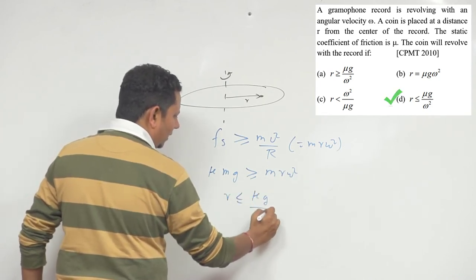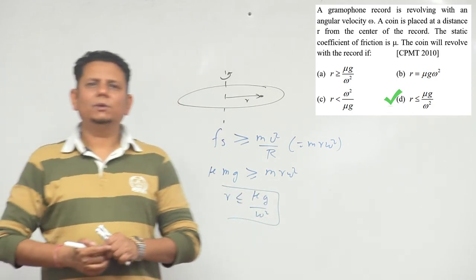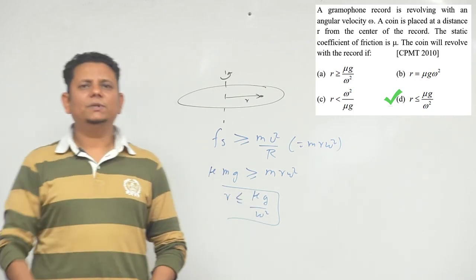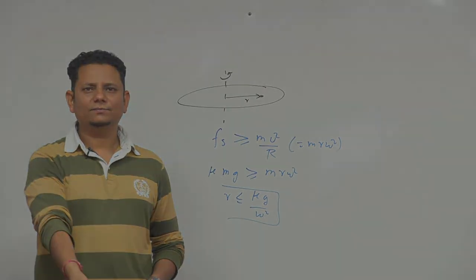μg/ω². This is only possible when r is less than or equal to μg/ω², which means option D is the right answer.